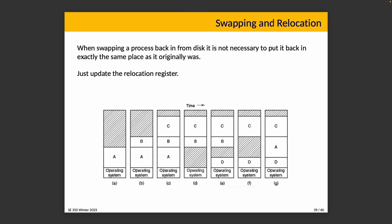When we swap a process back in from disk, we don't have to put it back in exactly the same location — we can just use the relocation register. A diagram shows a progression: process A is in memory, then B is added, then C; A is swapped to disk, D comes in, then to make room for A returning, B is swapped out. In the final step, C, A, and D are all in memory. To do this, we just update the relocation register when we've changed the location of A.